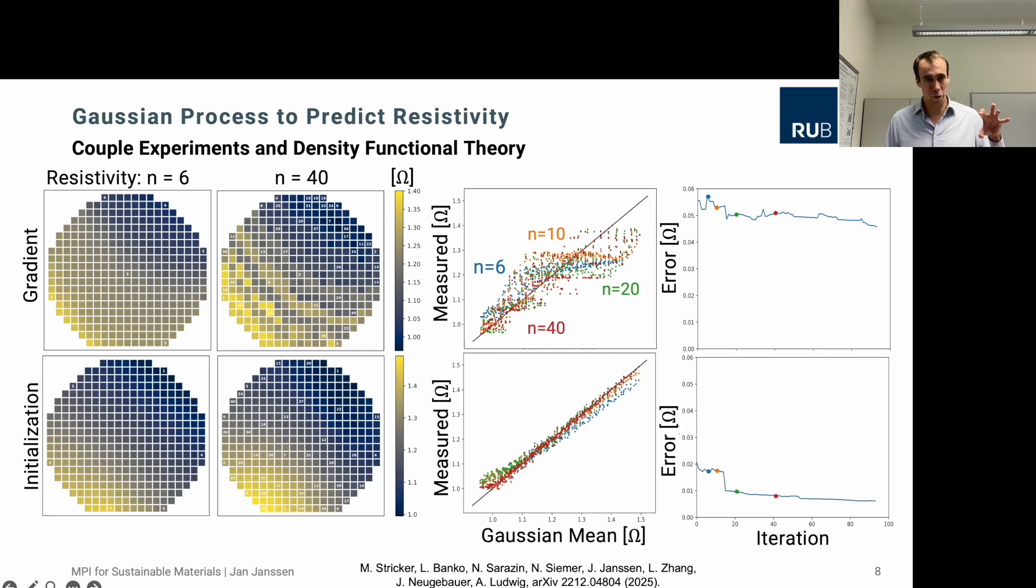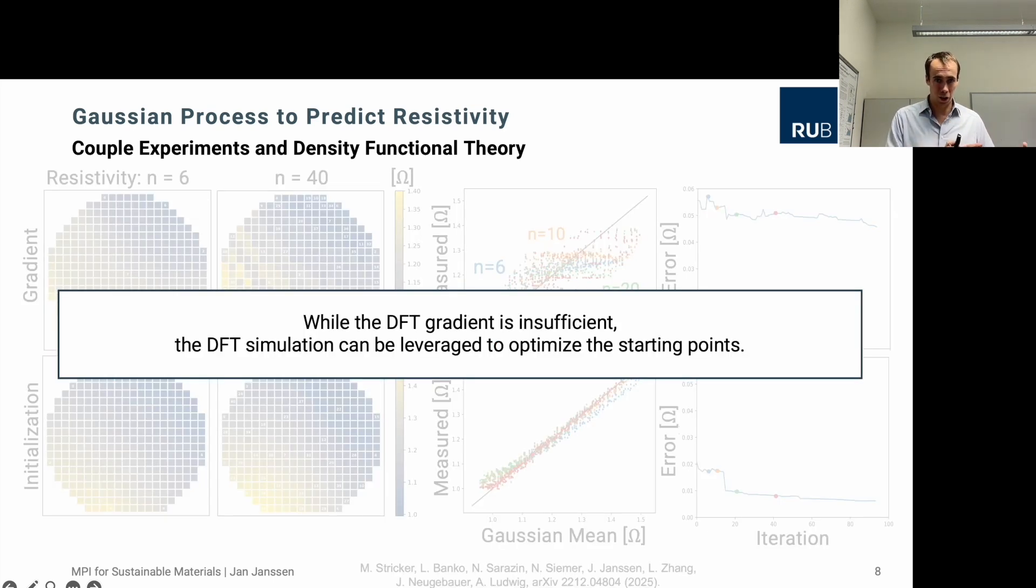But what helped was just using the information from density functional theory to find the right starting condition for our Gaussian process, optimizing the initialization. With this approach we really saw a drastic improvement and already after 20 predictions we were able to predict the resistivity over the whole wafer. By combining both density functional theory and experiment, the gradients were insufficient, but then using it as an initialization really helped us to optimize the whole procedure and drastically reduce the number of experimental measurements.